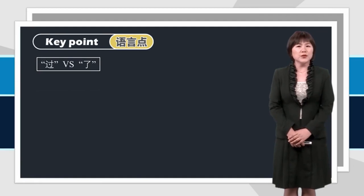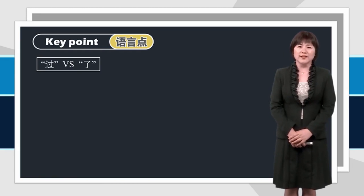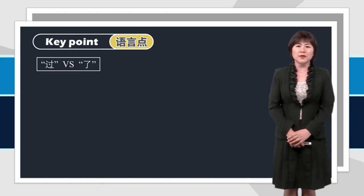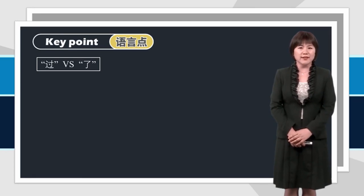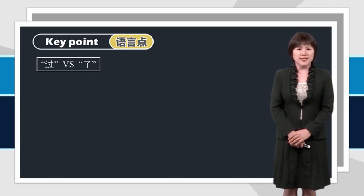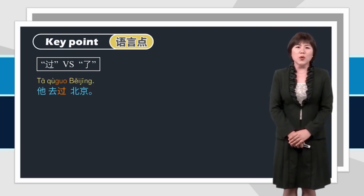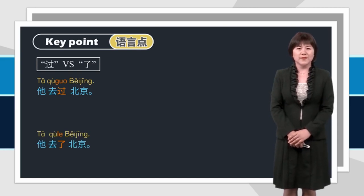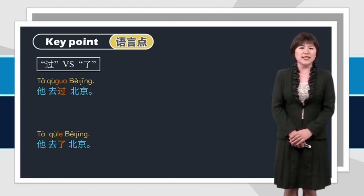We have learned the usage of 过 before. It is used after a verb, indicating a past action the speaker has experienced. And we also learned 了. It can be used after a verb, indicating the completion of an action. Let's compare these two particles today. Look at the following two sentences: 她去过北京。她去了北京。过 and 了 can be used in the same position of a sentence, but the meanings are not the same.